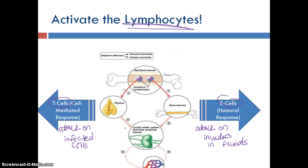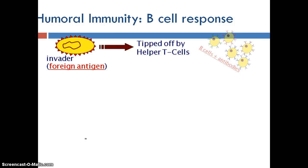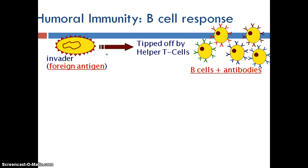Let's first take a look at the humoral response. The invader is identified and gets munched up by a macrophage. The macrophage displays the wanted poster on the MHC protein, which tells the helper T cells to release cytokines, which then activate our B cells. Our B cells are going to produce handcuffs to capture more of the accomplices. But the problem is there are so many antibodies — so many different handcuffs, these little Y-shaped structures — and it takes time to figure out which one will work.